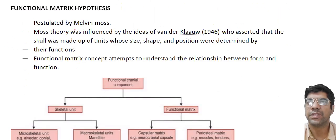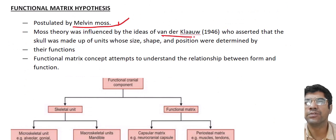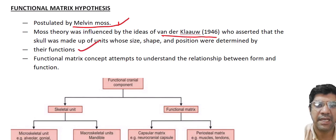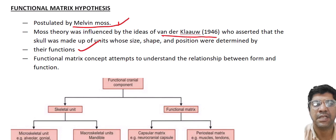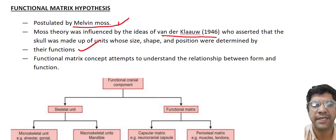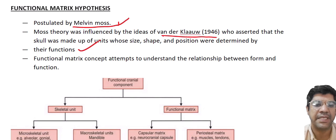The functional matrix theory was given by Melvin Moss, who was influenced by the ideas of Van der Klaauw, who asserted that the skull is made up of units whose size, shape, and position are determined by their function. According to this hypothesis, the skull is not a single homogeneous structure but a collection of functional units — specialized regions of the craniofacial complex associated with specific functions. The functional matrix theory seeks to explore how the form of a functional unit is linked to its function. Moss stated that the craniofacial complex evolves and adapts in response to functional requirements like mastication, speech, and respiration.